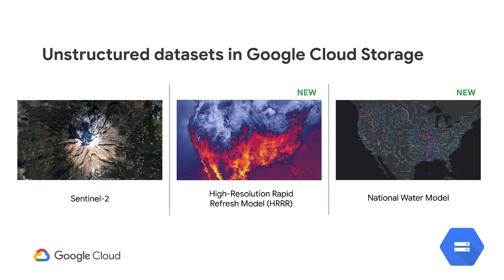We're constantly adding new datasets, and here are just two examples of recently added unstructured datasets, both coming from NOAA, the National Oceanic and Atmospheric Administration. These are the high-resolution rapid refresh model, which includes fine-grained wind data at various altitudes, and the National Water Model, which has information about flooding and water movement across the continental United States.